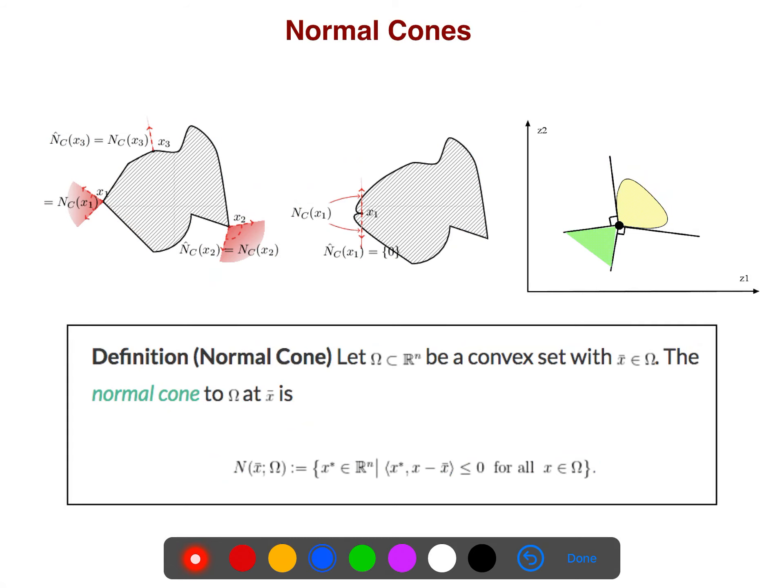And so, they need to know some concepts from non-smooth analysis and how they are related to each other. For example, this is the normal cone, this is the normal cone of this set, of this set. And so, we gather all directions that have, I mean, the angle between this one and any point in the set is greater than 90 degrees.